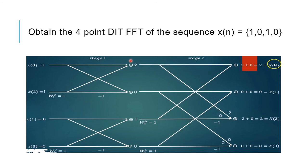Stage 2 for 4 point DIT: the stage 1 outputs become stage 2 inputs. 2 goes directly; 0 is the other input. Twiddle factors are W4^0 and W4^1. Computing: 0 into 1 is 0, so 2 plus 0 is 2. Next line: 0 plus 0 is 0. Then 2 comes directly and 0 into W4^1 is 0, so 2 plus 0 is 2. The last: 0 plus 0 is 0. Output sequence is 2, 0, 2, 0 — this is the 4 point FFT result.